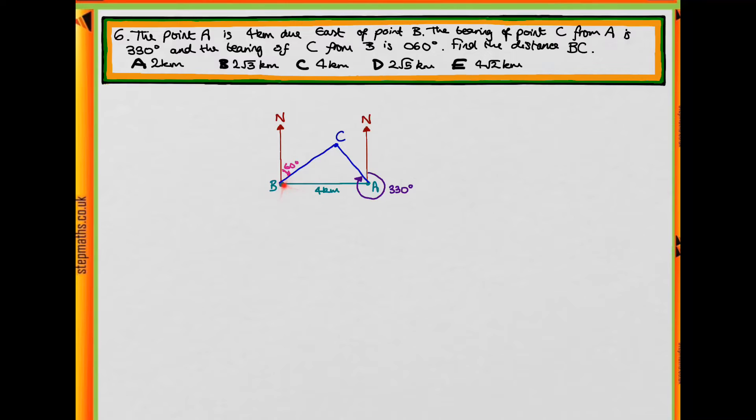Okay, so we can look and extract out this triangle here. So it looks something like this, but this is 4 kilometers. And first thing we want to do is find these angles here. So to do this, we're going to look at what we already know.